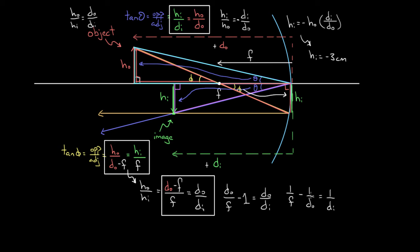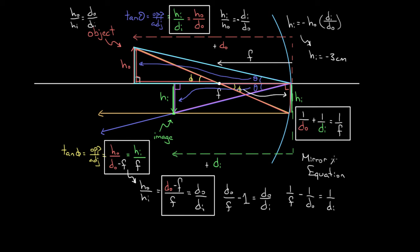Adding one over DO to both sides, we finally get the mirror equation: one over the object distance plus one over the image distance equals one over the focal length. It's a pretty simple formula. If you know how far you put the object from the mirror and you know the focal length, this lets you figure out exactly where the image is — instead of eyeballing it with a protractor. Coupled with the magnification equation, you can also figure out the exact height of the image.